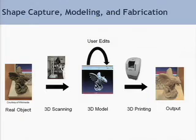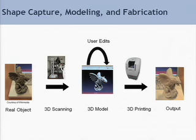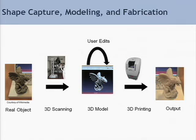Shape capture, modeling, and fabrication is a very good example of this type of closed pipeline. We can capture pretty much any three-dimensional geometry using a 3D scanner, then create a 3D model, edit this model if necessary, and finally fabricate this edited model using a 3D printer.